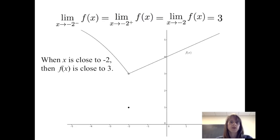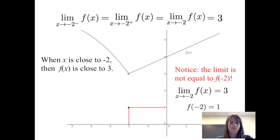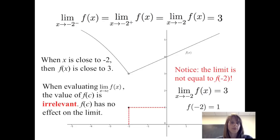Now in this particular case, we can note that the limit itself is not actually equal to the function evaluated at negative 2. The limit of f of x as x approaches negative 2 is 3, but the function evaluated at negative 2 is equal to 1. Just a reminder that when we're evaluating the limit of f of x as x approaches c, the value of the function at c itself is irrelevant — the function evaluated at c has no effect on the limit.